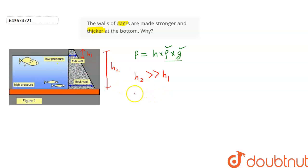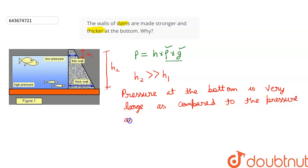So, let's conclude. The pressure at the bottom is very large as compared to the pressure at top. Therefore, the wall at the bottom is thicker.